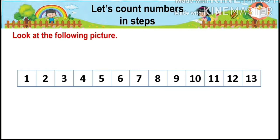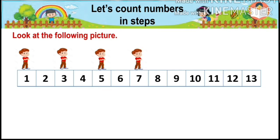Look at the man standing on number one. Now this man goes to the next number, three, skipping two. Again he goes to the next number, five, skipping four. Then he goes to the next number, seven, skipping six.